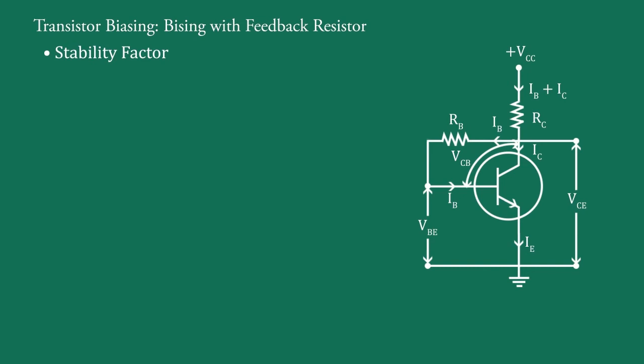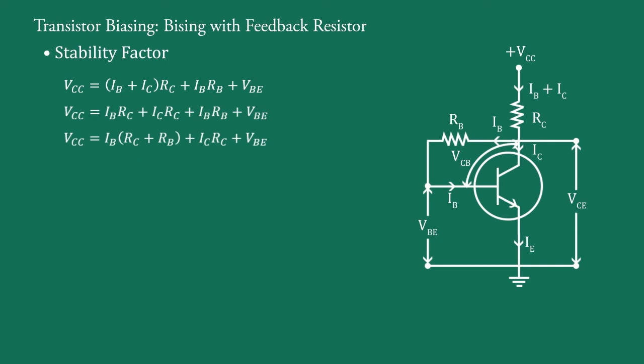Now, stability factor. In the input section of the circuit, we write: VCC = (IB + IC) × RC + IB × RB + VBE. Expanding: VCC = IB × RC + IC × RC + IB × RB + VBE. Taking IB common: VCC = IB × (RC + RB) + IC × RC + VBE. Making IB the subject: IB = (VCC − IC × RC − VBE) / (RC + RB).